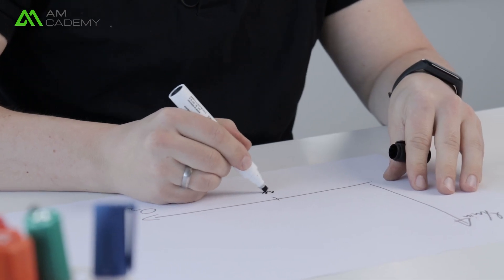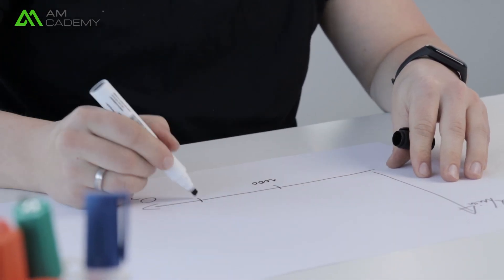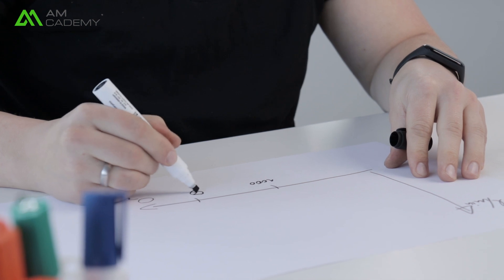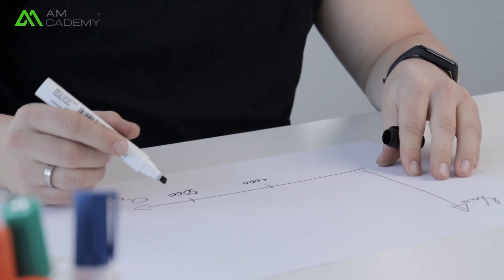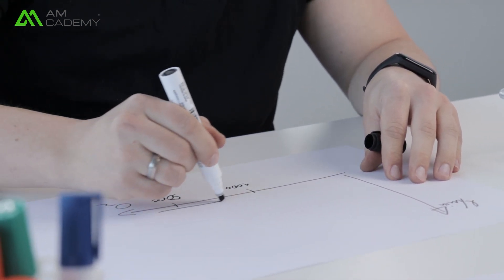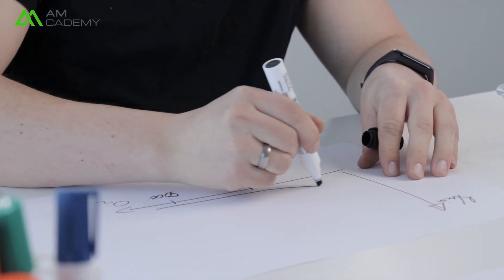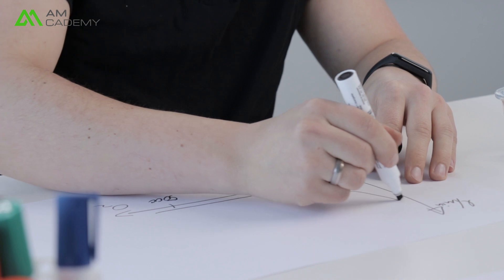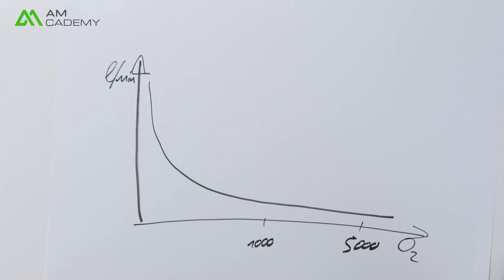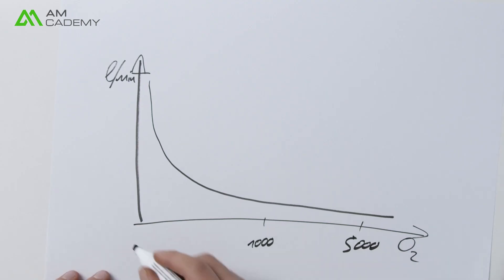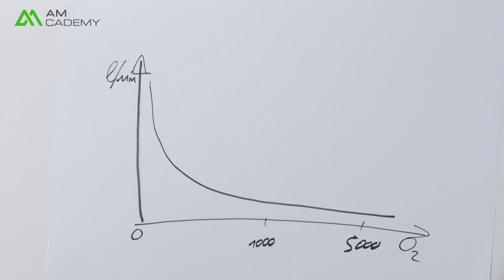If, let's say, this is 1,000 and this is 5,000 ppm, then the lower you go toward absolute zero the higher your consumption of shielding gas will be, because you continuously need to purge your chamber with new gas to stay at a really low level.